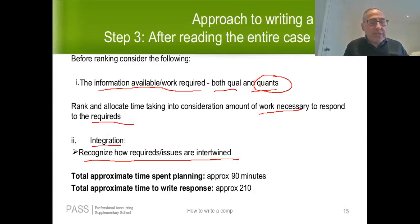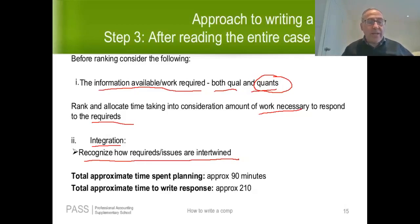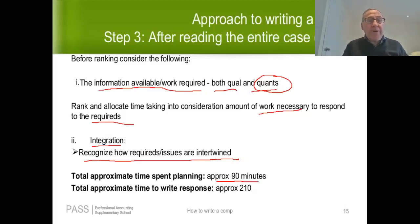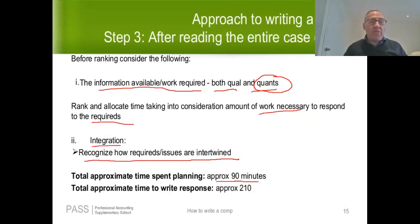The total approximate time for planning — including all three steps — is probably about 90 minutes. Some comps are shorter, so you might complete all three steps in about 70 minutes. On average, I'm saying about 90 minutes for planning and the remaining 210 minutes to actually write the case.